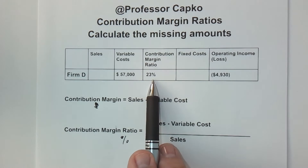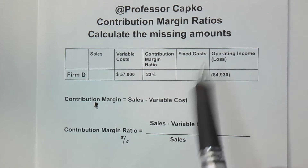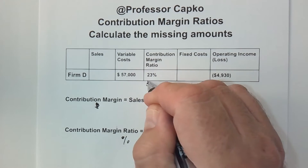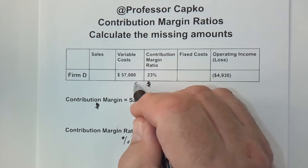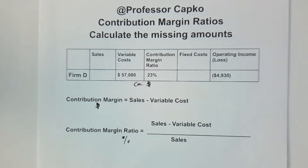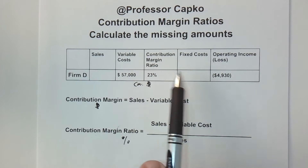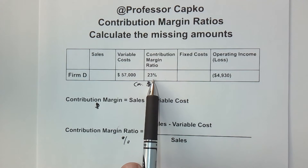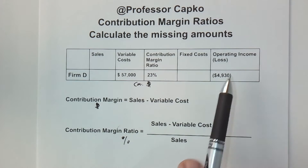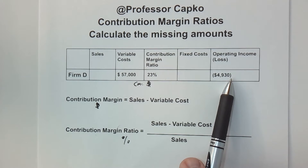We've already got a contribution margin ratio of 23%, but I want to make that distinction because as we're going through this I also want to find the contribution margin in dollar amounts. We don't know the sales and we don't know the fixed costs, but we do know variable costs and the contribution margin ratio. And ultimately we know that the company lost $4,930.